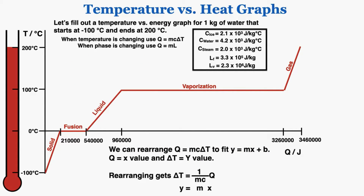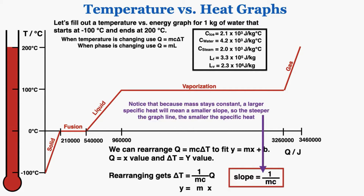We can rearrange Q = mcΔT into the form y = mx + b. With Q as x and ΔT as y, rearranging gives ΔT = (1/mc) × Q, so the slope equals 1/mc. This means the slope of the graph always equals 1 divided by the mass times the specific heat. Because mass stays constant, a larger specific heat produces a smaller slope — so a steeper line actually means a smaller specific heat.